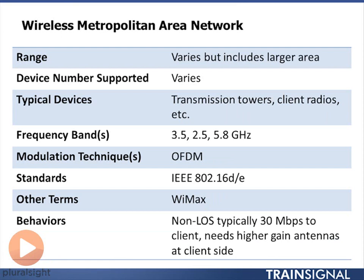For metropolitan area networks, the range varies quite a bit but normally covers the metropolitan area, as the name suggests. Whereas wireless LANs are placed on the ceiling at 10–20 feet high, metropolitan area networks use transmission towers deployed much higher up, which enables much greater coverage. They're deployed in frequency bands that allow higher transmitted power — around 3.5 GHz, or between 3.3 and 3.6 GHz overseas, the 2.5 GHz band in North America, and also the 5.8 GHz band. Outside regulation allows higher power levels, meaning signals travel further and coverage is greater.